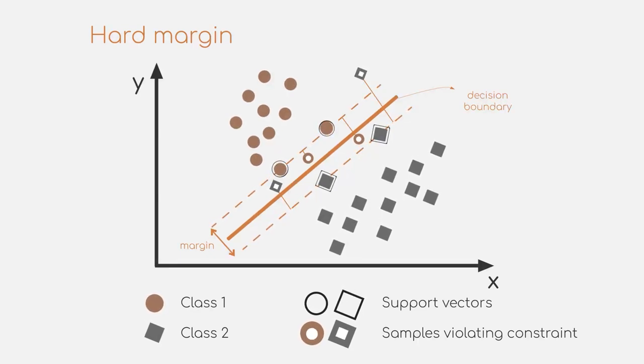A hard margin basically means that the algorithm aims at finding a margin to make zero errors in the prediction. Additionally, of course, the algorithm also tries to find the biggest possible margin with zero errors.